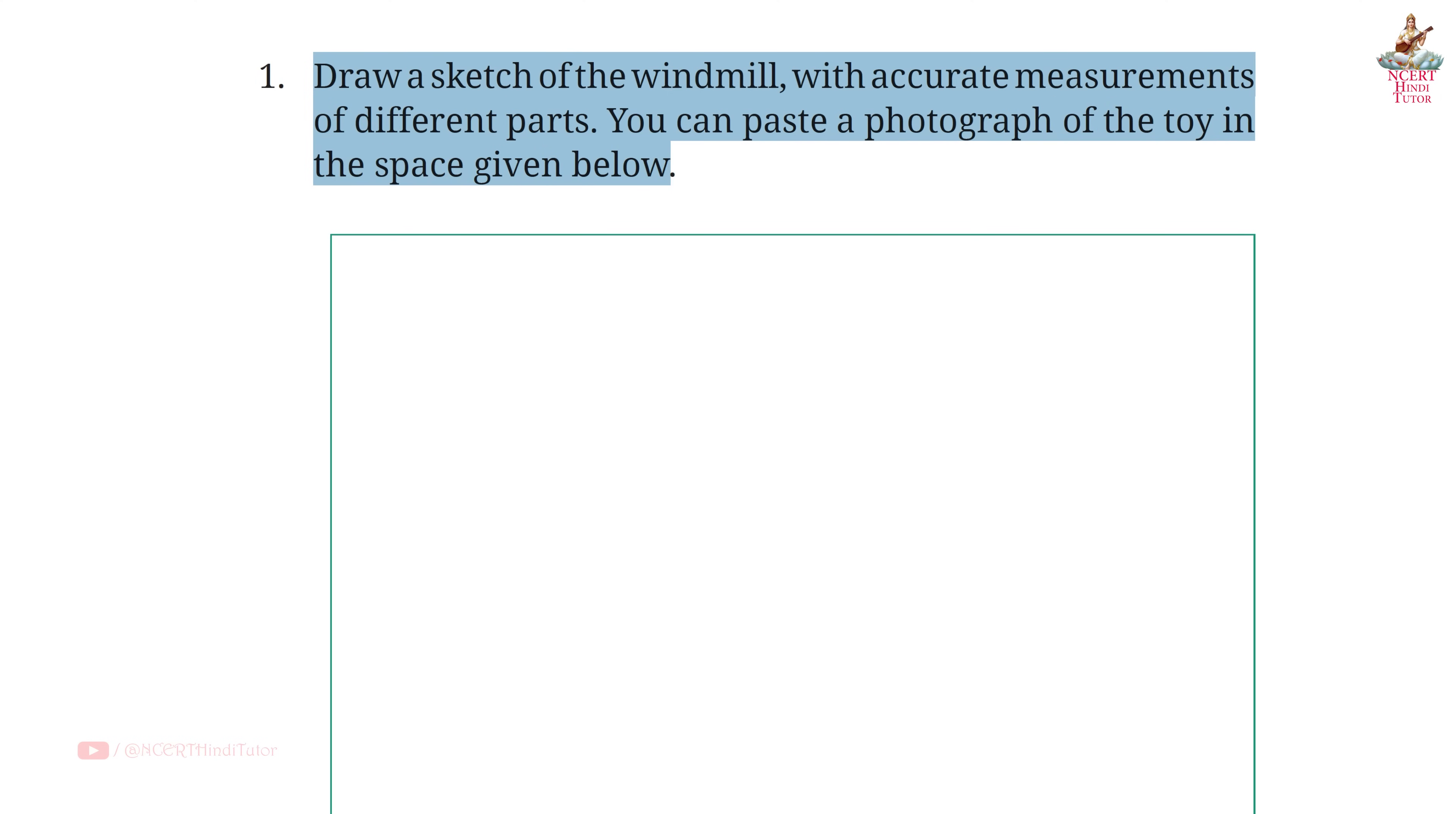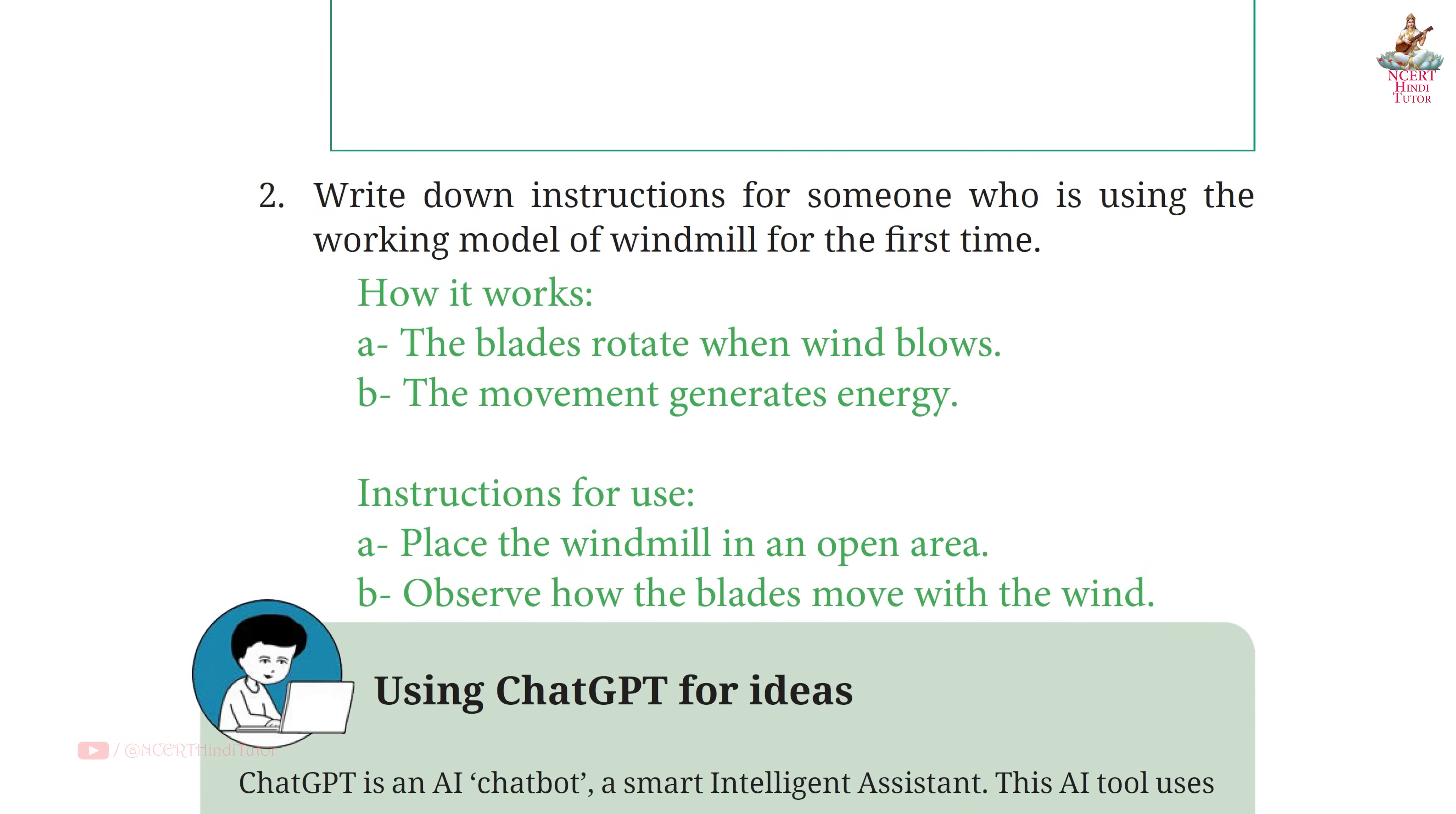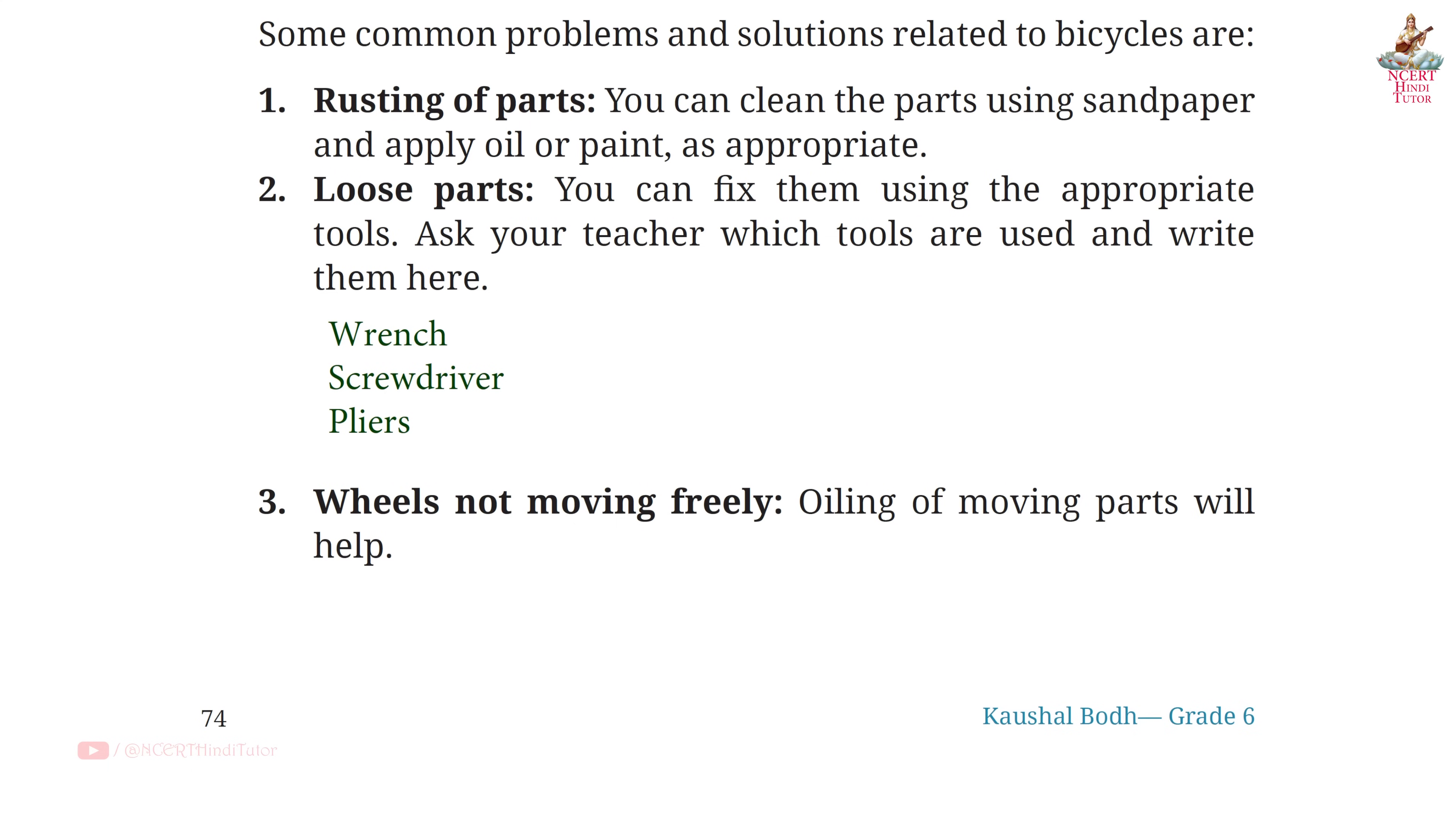Page 72, Question 1: Draw a sketch of the windmill with accurate measurements of different parts. You can paste a photograph of the toy in the space given below. So friends, you have to do this yourself. Question 2: Write down instructions for someone who is using the working model of windmill for the first time. Answer, How it works: A) The blades rotate when wind blows. B) The movement generates energy. Instructions for use: A) Place the windmill in an open area. B) Observe how the blades move with the wind.